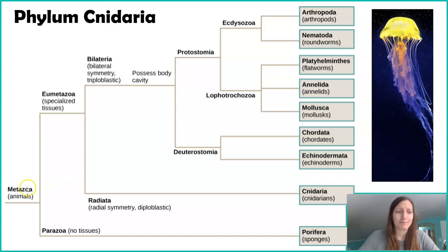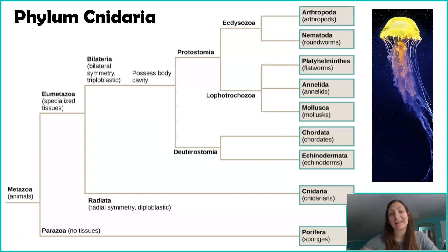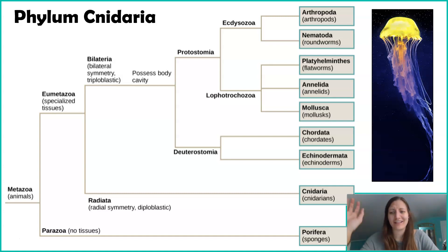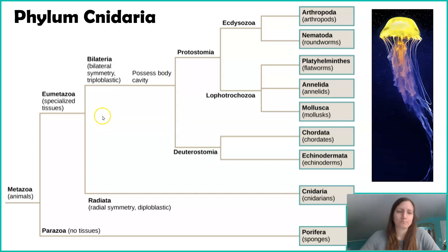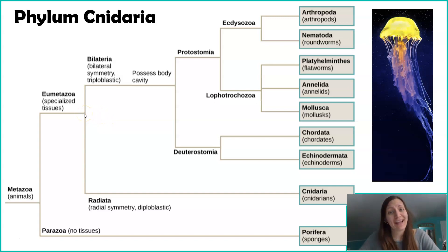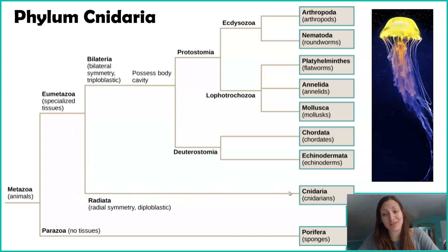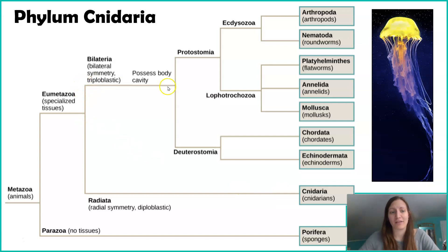We've already talked about sponges, so now we're going to go down the branch that has tissues. Remember, sponges lacked tissues, so we couldn't talk about diploblasts or digestion or anything like that. We're going into organisms that have tissues, and here we see a branching point — the common ancestor of animals with tissues leads to our radially symmetrical organisms, our cnidarians.